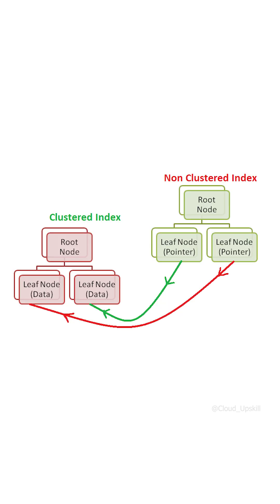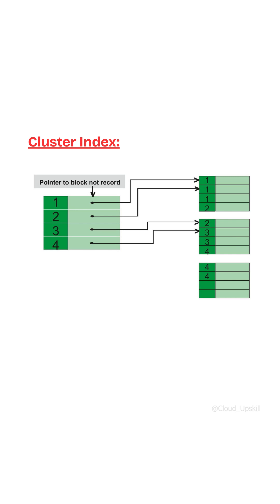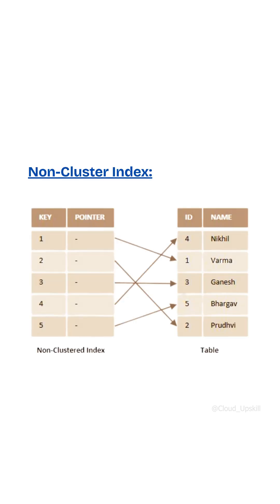Whereas non-cluster index leaf nodes have index columns and pointing to the data. Cluster index defines the physical order of the rows in the table, and non-cluster index defines the logical order of the data in the index, not the table.